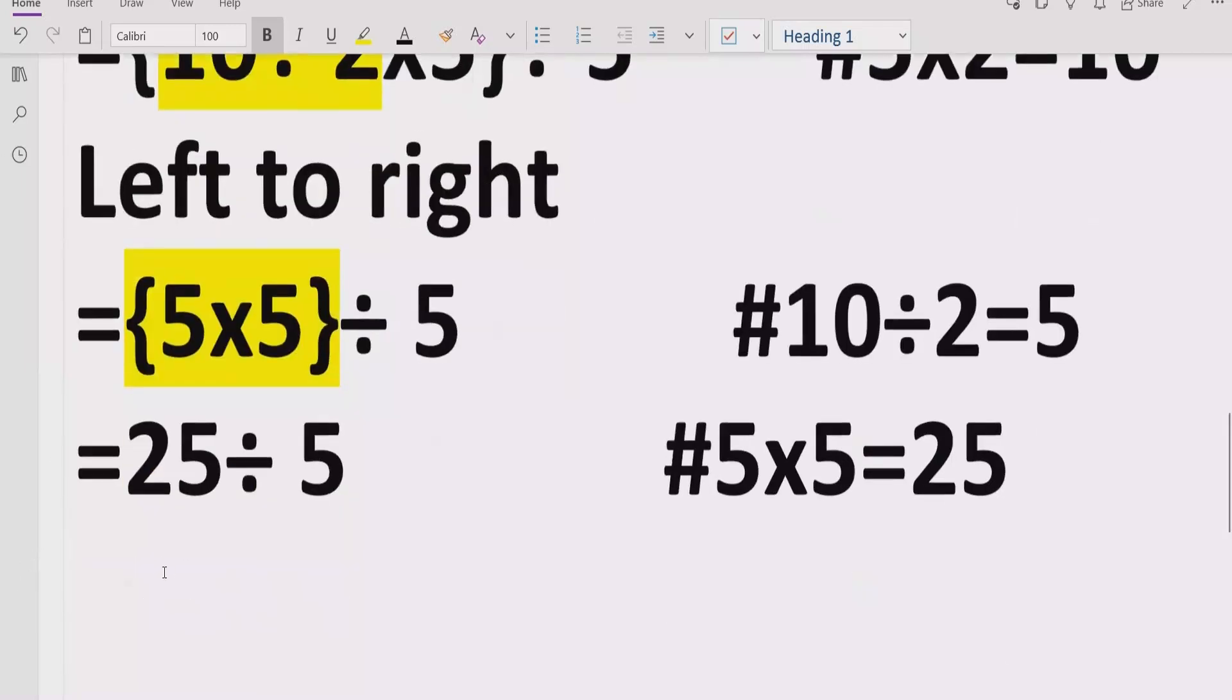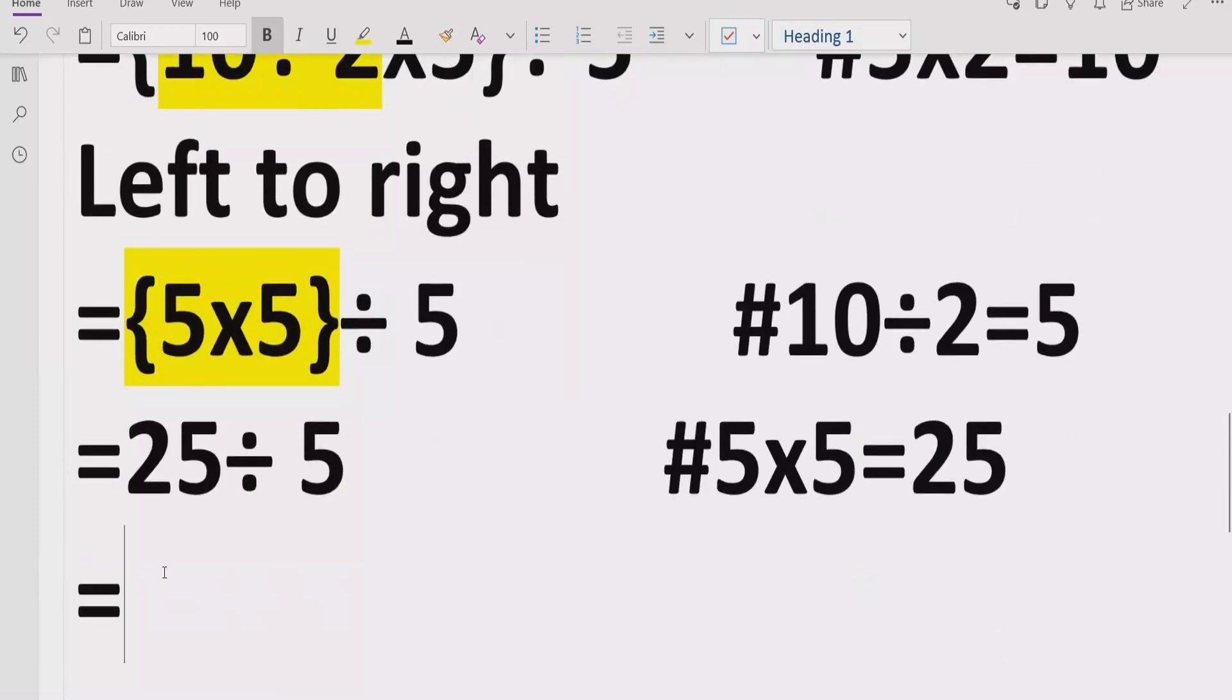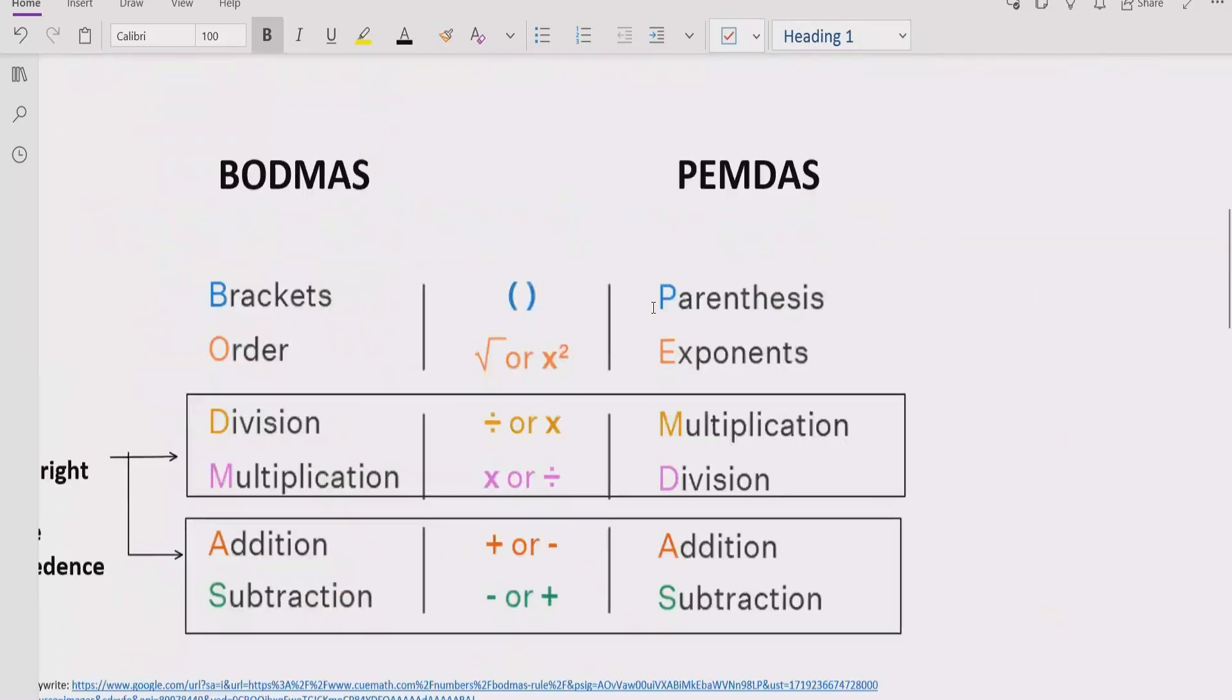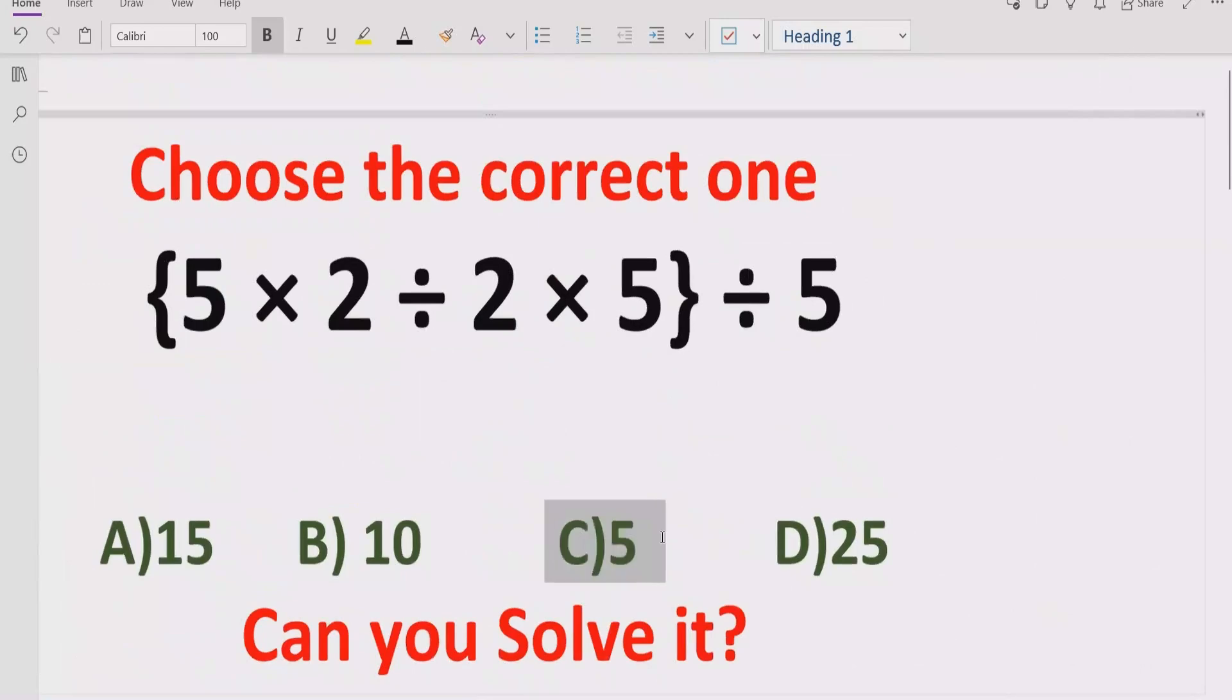Now we have two terms which are dividing each other. So we will divide both of them and get the answer: 5. So the answer of the given expression is 5. If you see, answer C is the correct answer of this expression.